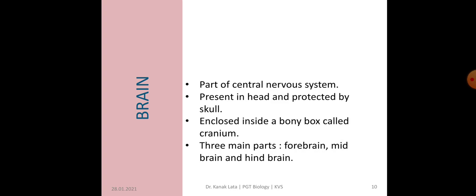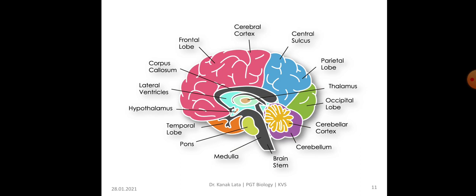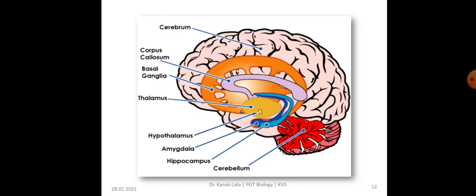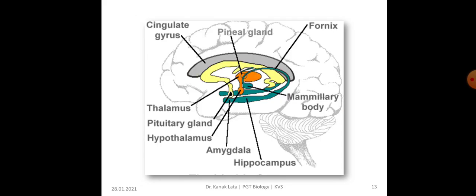Now, it is about brain. Brain is a part of central nervous system and is present in head and protected by skull. Brain is enclosed inside a bony box and this bony box is called cranium. There are three main parts of brain. They are forebrain, midbrain and hindbrain. The given figures indicate the different parts of brain and the glands present in the brain.